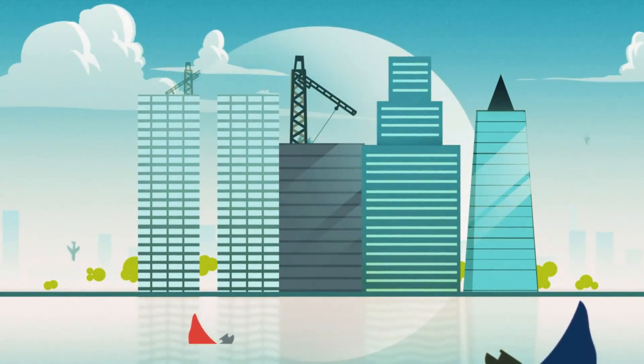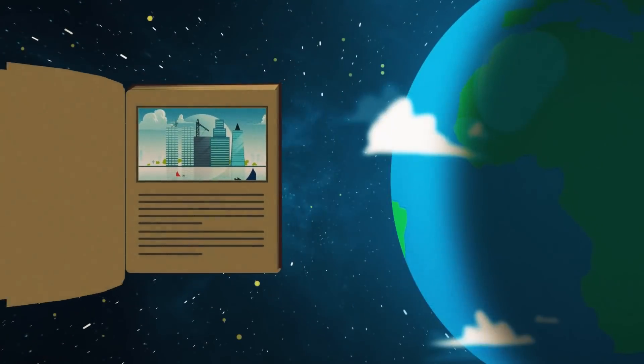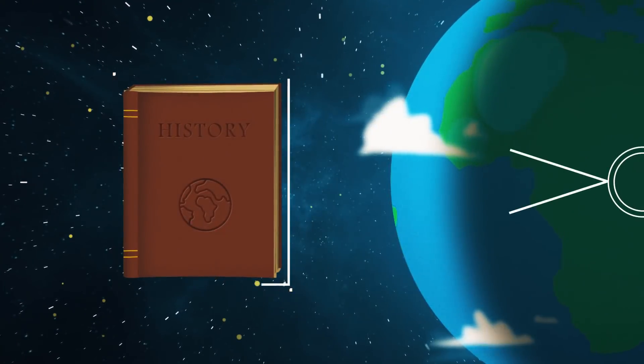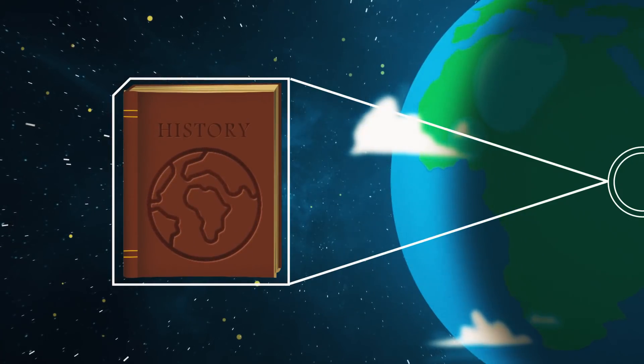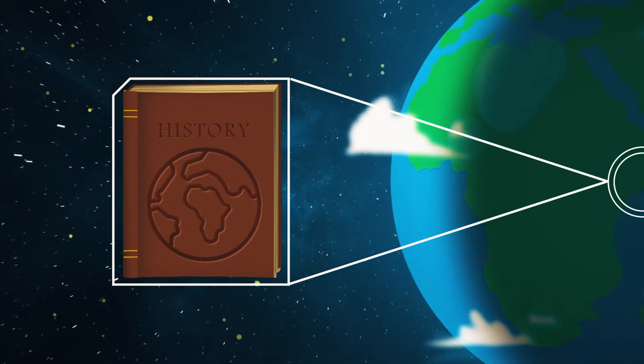But what if humans had always lived on a planet ten times the size of Earth? What if we rewrote the history of our planet, changing this one important variable? What would the world look like today?